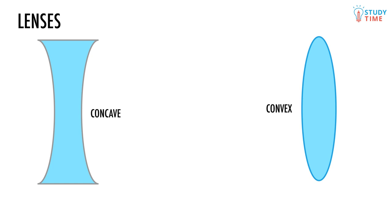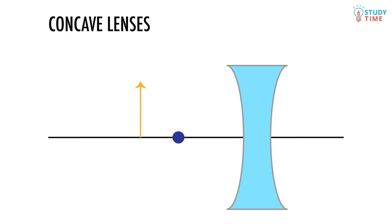Concave lenses work in the simplest ways, so let's start there. The focal distance for a concave lens is always negative because the focus is located on the same side as the object. Concave lenses are also called diverging lenses because when light rays hit them, they spread out.